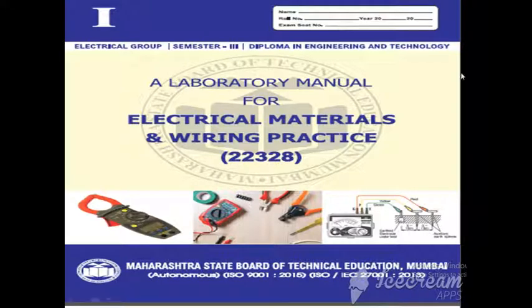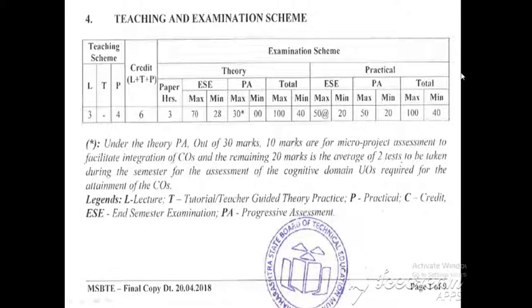Hello everyone. Today we are discussing about the laboratory practicals or laboratory experiments under the Electrical Material and Wiring Practice subject. We are performing video lectures on the EMW subject with subject code 22328. Total 32 practicals are allocated for this subject. Under the teaching and examination scheme, each experiment carries 50 marks, and end semester exams conducted internally also carry 50 marks, making a total of 100 marks allotted from practical activities.